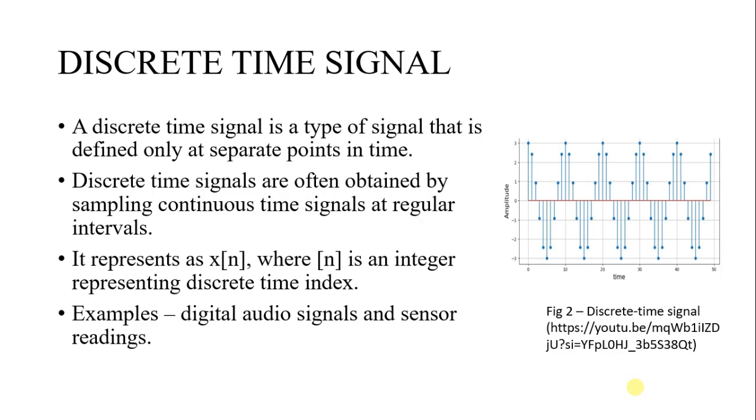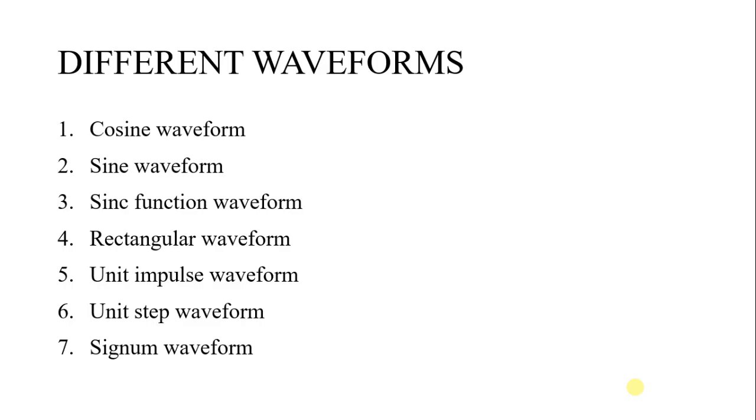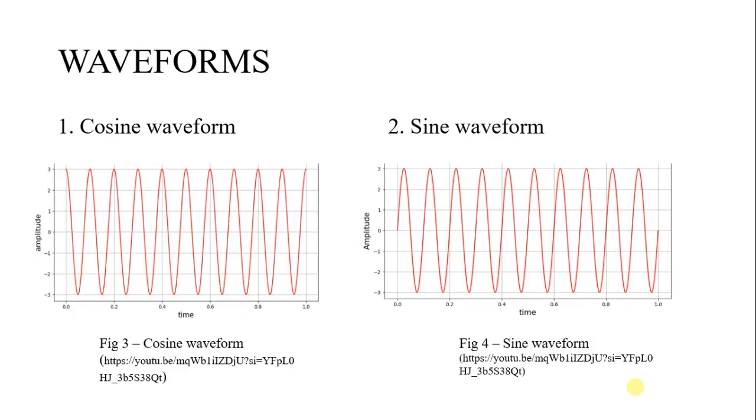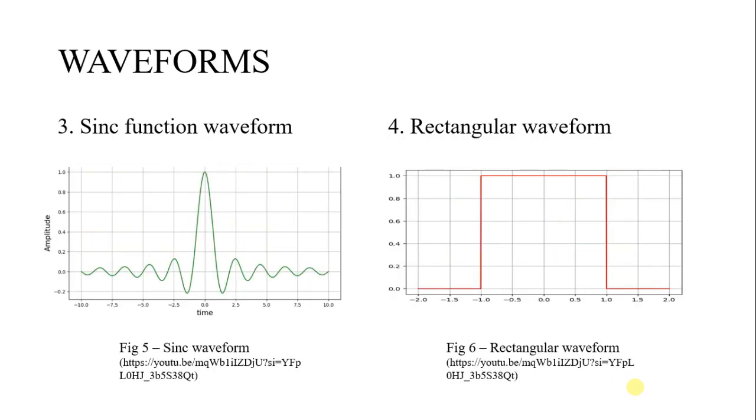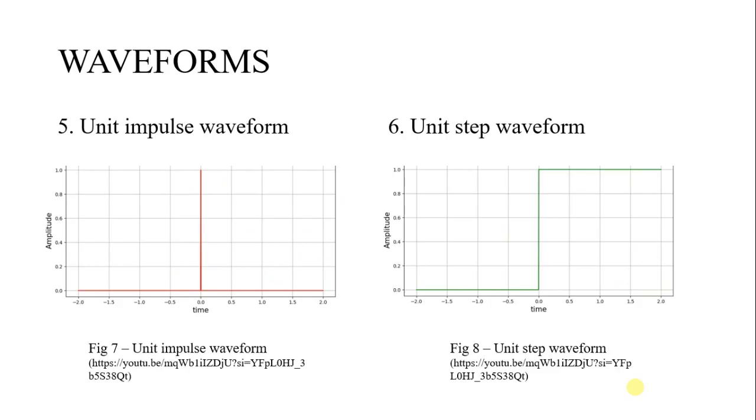Next are different types of waveforms which are cosine waveforms, sine waveform, sinc function, rectangular impulse, unit impulse, unit step, and exponential function, which are being performed in today's lab experiment. Here is how these waveforms look like: cosine, followed by sine, then sinc function, rectangular waveform, unit impulse, unit step signal, and then exponential waveform.